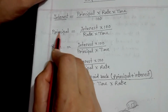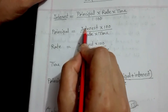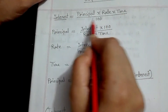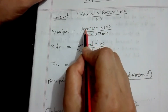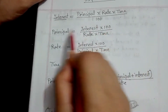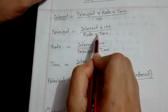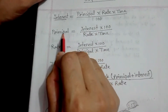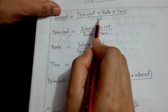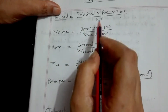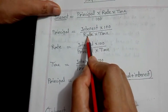I will write the principal formula. The interest formula is the same. The principal formula is interest into 100, divided by rate into time. I will write the principal formula: Principal equals interest into 100, divided by rate into time.